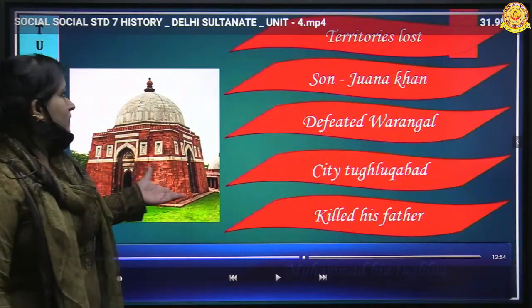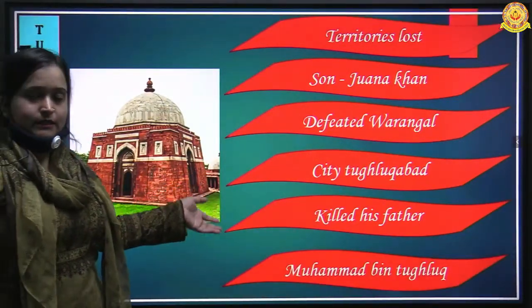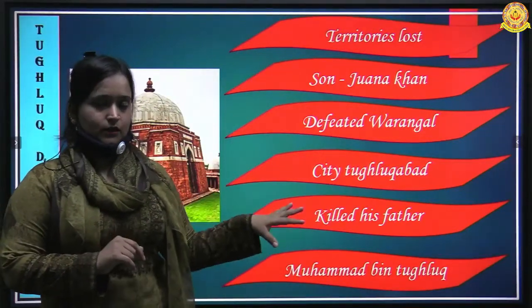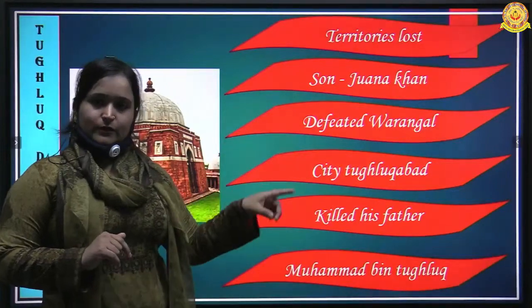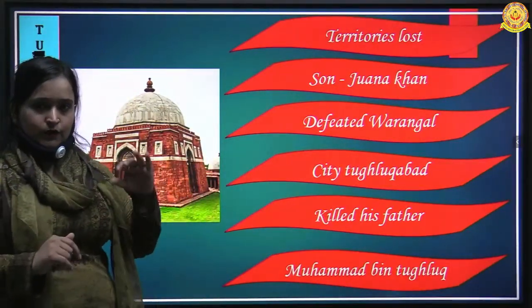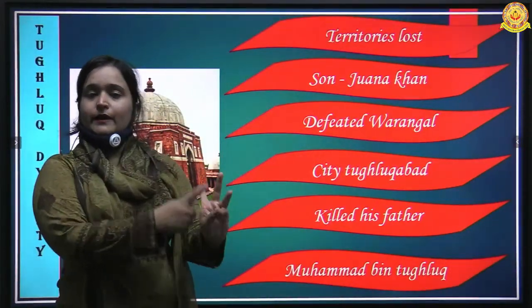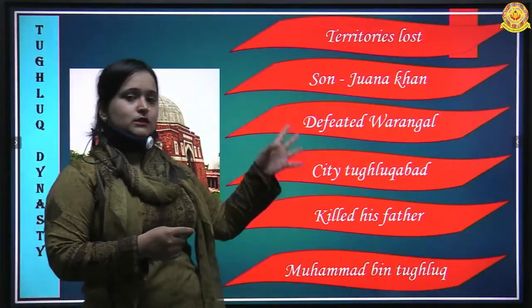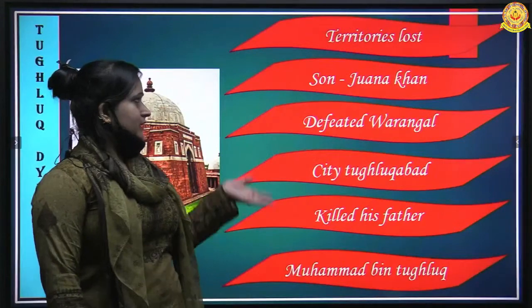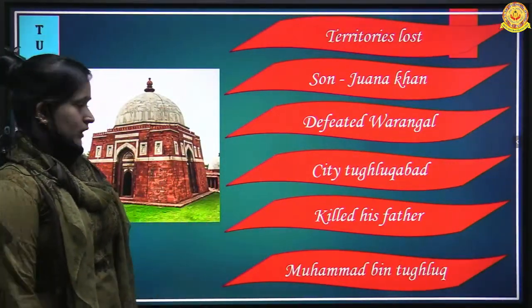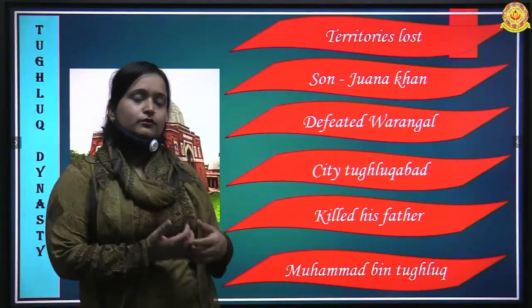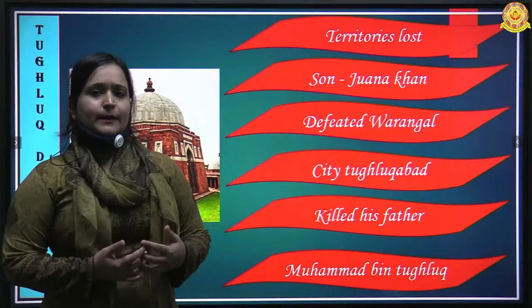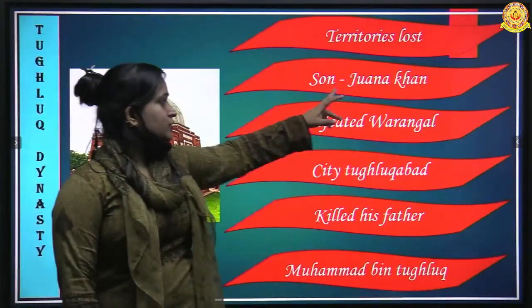The first ruler of the Tughlaq Dynasty was Ghiyasuddin Tughlaq. He attacked and defeated the last successor of the Khalji Dynasty and became sultan. This made the Tughlaq Dynasty the third dynasty of the Delhi Sultanate — after the Slave Dynasty and the Khalji Dynasty. Ghiyasuddin Tughlaq was a very good ruler compared to the rest of the Tughlaq rulers.